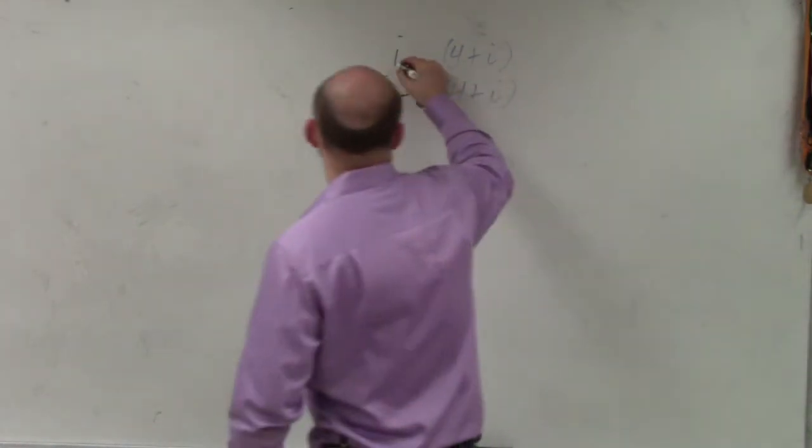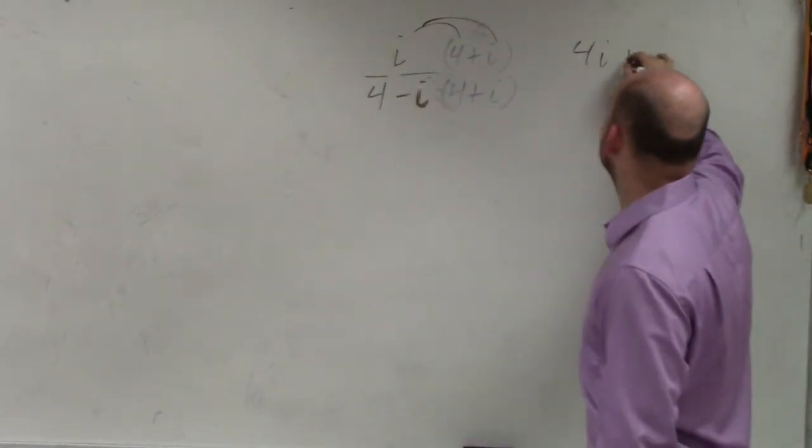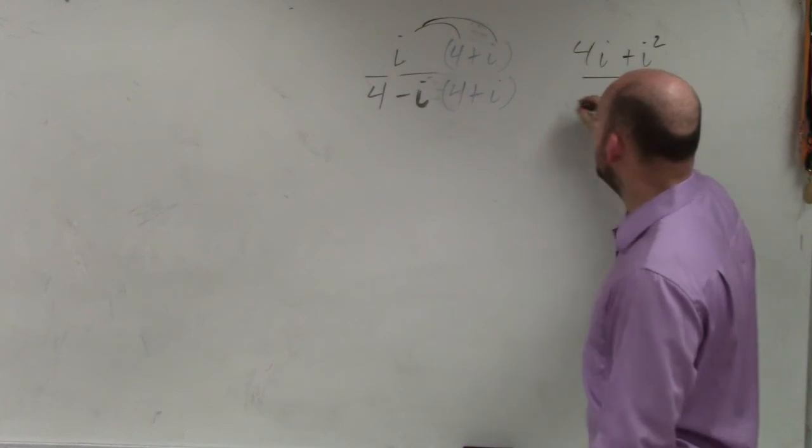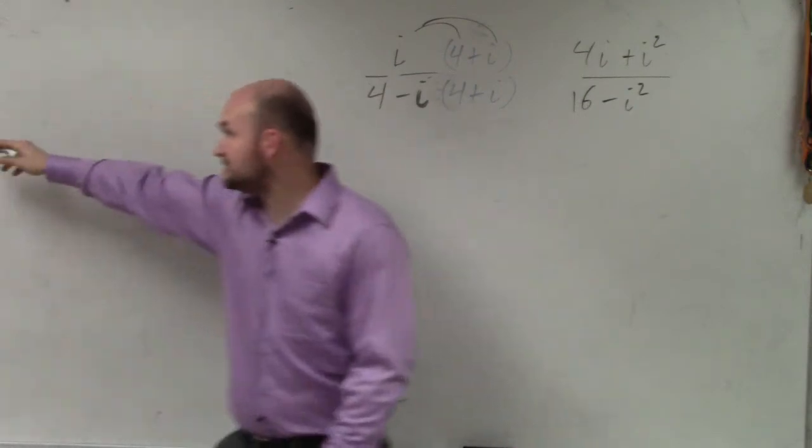So if I simplify, I'm going to distribute my i. So I have 4i plus i squared all over 16 minus i squared. Now I can rewrite my i squareds as negative 1.